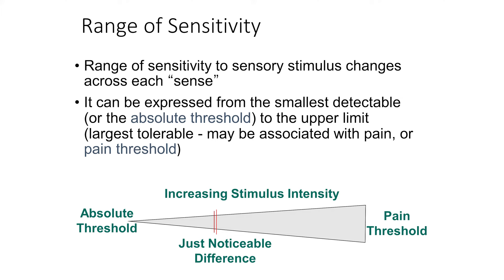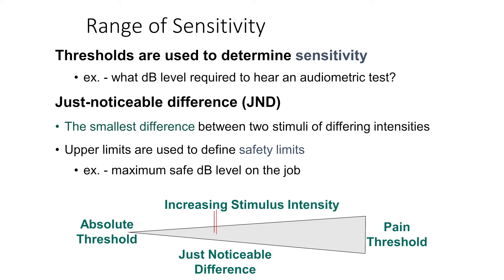Before we get into the nuances of signal detection, we need to understand how we respond to a stimulus. There is a range of sensitivity to stimuli that varies across each sense. We can express the sensitivity of stimuli from the smallest detectable stimulus to the upper limit of what we can perceive. The absolute threshold is the stimulus intensity required to detect the presence of the stimulus some proportion of the time. For example, the number of hairs on the back of one's hand that must be touched before it can be felt. The upper limits of a range of sensitivity define the safety limits and pain threshold — for example, the maximum safe sound pressure level is 85 dB for an 8-hour exposure period, and sound can become uncomfortable at about 110 dB and cause pain at 130 dB, which we would define as the threshold for pain.